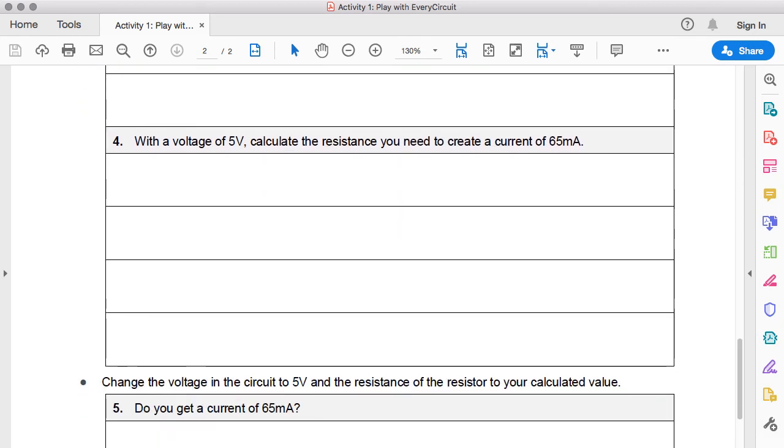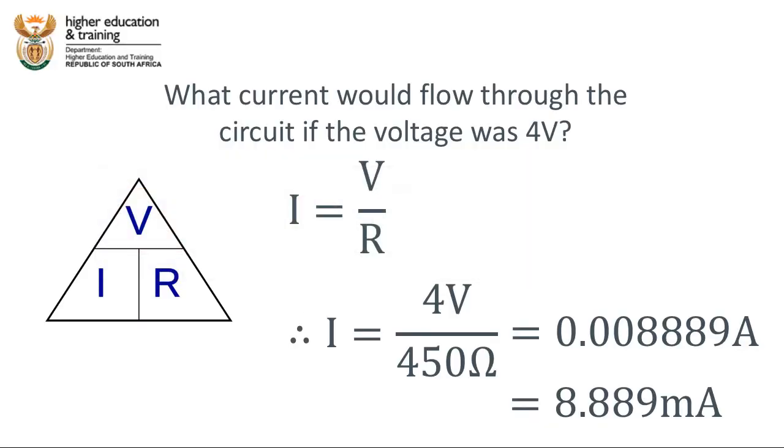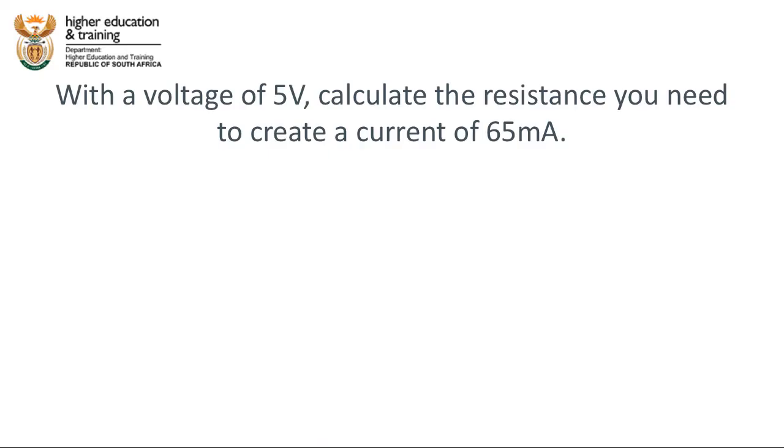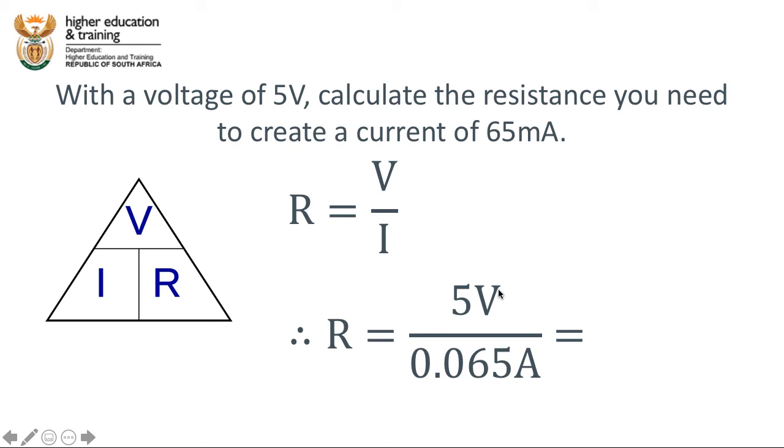Question 4 says, with a voltage of 5 volts, calculate the resistance you need to create a current of 65 milliamps. In this case, we need to solve for resistance. The resistance is equal to the voltage divided by the current. We know that the voltage will be 5 volts, and we know that the current will be 65 milliamps. Convert that into amps, 0.065 amps. You do that simple calculation on a calculator, and you will get a resistance value of 76.923 ohms.